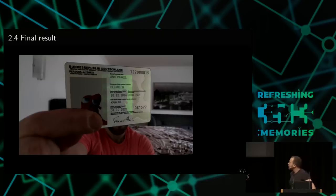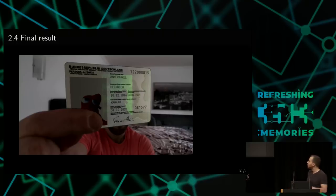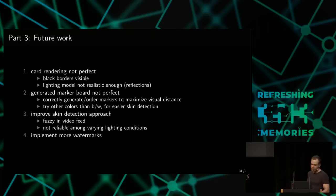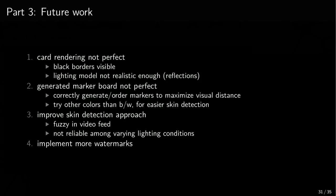The final result still has some work to do: the card has some black border around it, which is only a Photoshop issue. The finger area is a bit fuzzy, which is also an issue — in the video stream this would change dynamically. The card looks too good and would need to be blurred or have more lighting effects added. The generated marker board is not perfect according to the paper — the neighbors should be different markers. Also the skin detection does not work reliably in varying lighting conditions; here at the congress I could not find good indirect lighting conditions for a sample video. I would also need to implement more of the other six watermarks.